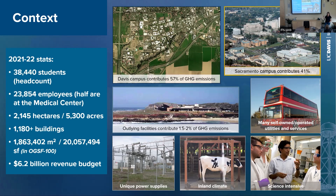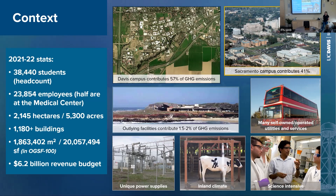We have a wastewater treatment plant, electrical substations, unique power supplies, people-powered buildings, a couple of landfills harvesting biogas from fire digesters, and on and on. We are an inland climate, so while most people think of the need for cooling, we actually have more heating and cooling degree days — we spend a lot of energy bringing buildings up to comfort temperature as well as bringing them down. We have a lot of simultaneous heating and we're science-intensive.